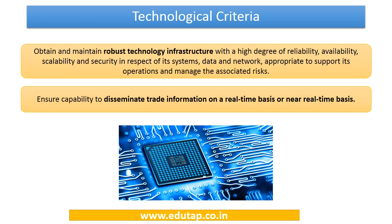Under the technological criteria, it is required that the entity maintains robust technological infrastructure with a high degree of reliability, availability, scalability, and security, so that the huge amounts of transactions on this platform remain secure, protected, and reliable. The objective is to ensure that there is a capability to disseminate trade-related information on a real-time or near real-time basis. This is why the technological criteria is also very important for becoming an ETP.